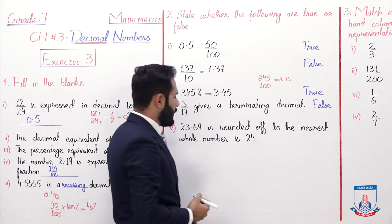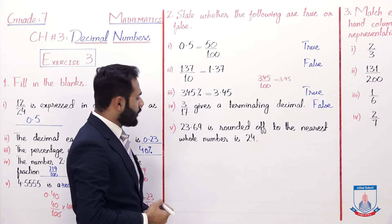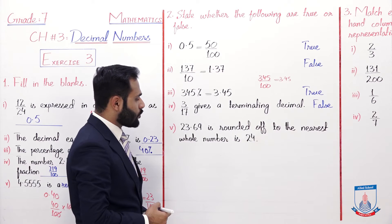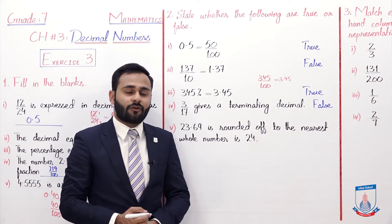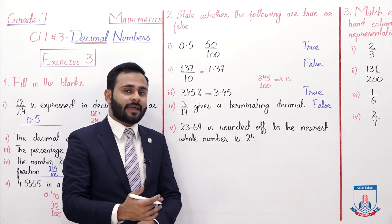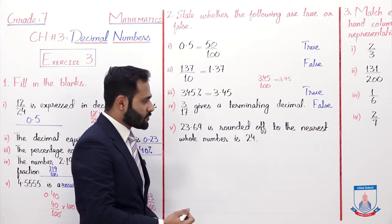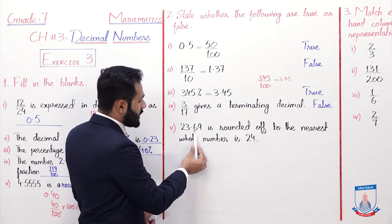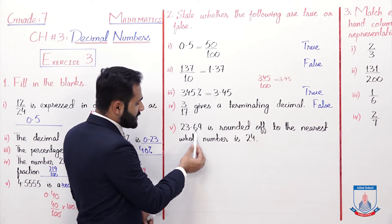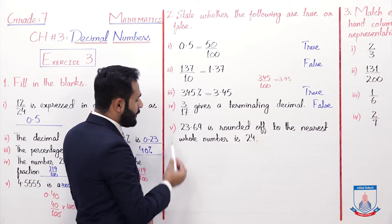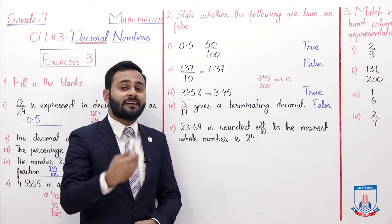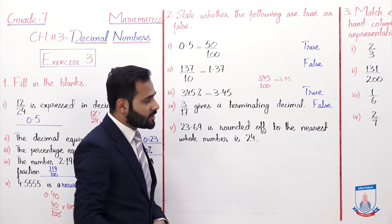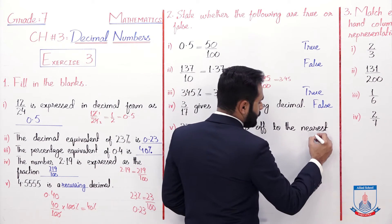The last statement: 23.69 rounded off to the nearest whole number is 24. Yes, this is true. When rounding to the nearest whole number, we look at the digit after the decimal — it is 6, which is greater than 5 — so we increase by one and it becomes 24. True.